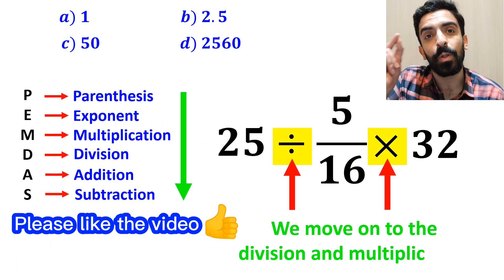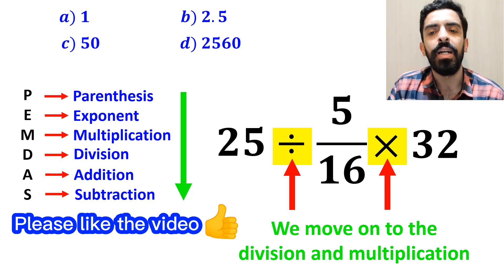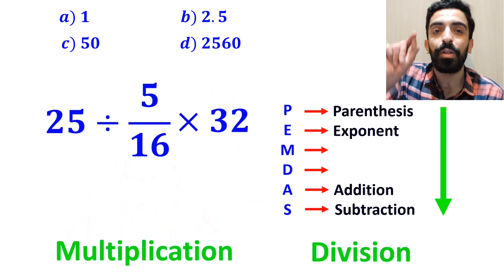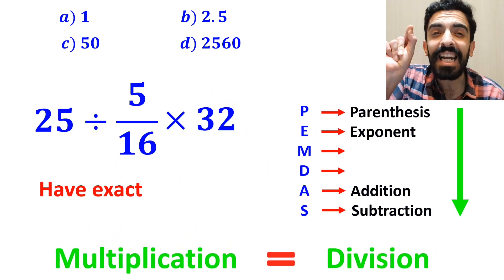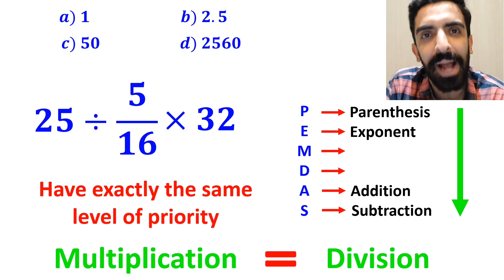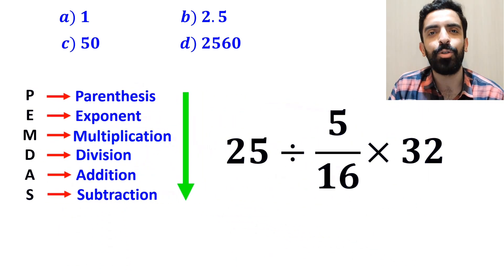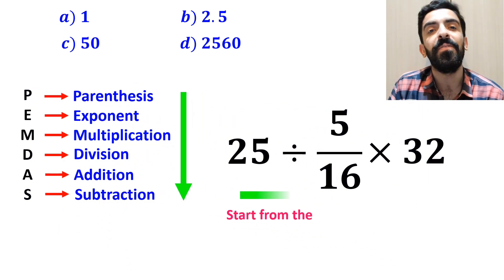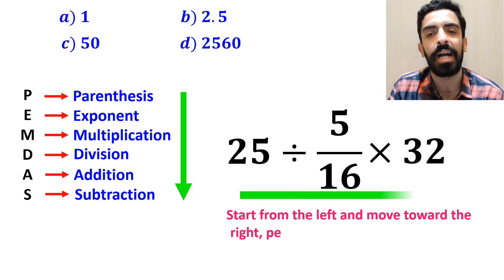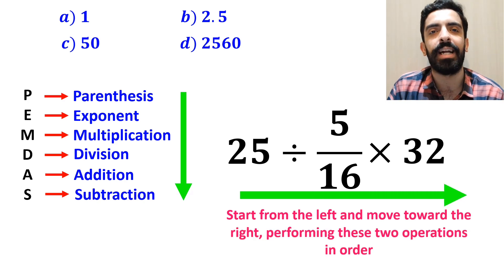At the next step, we move on to the division and multiplication. However, it's very important to note that multiplication and division have exactly the same level of priority in the PEMDAS rule. In this situation, the best approach is to start from the left and move toward the right, performing these two operations in order.